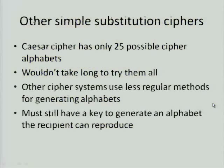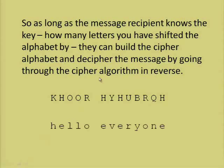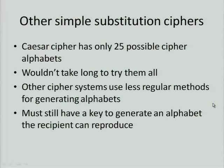The problem with the Caesar cipher is that there are only 25 possible alphabets. Because if you think about it, the 26th alphabet is the original alphabet. So actually, this is not going to take you very long to try all 25 alphabets on the message and see which one comes out with something sensible.